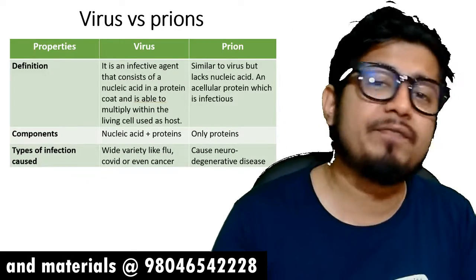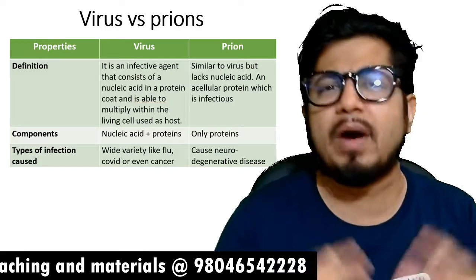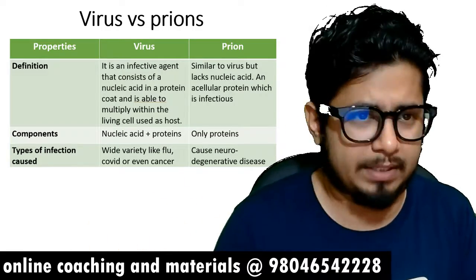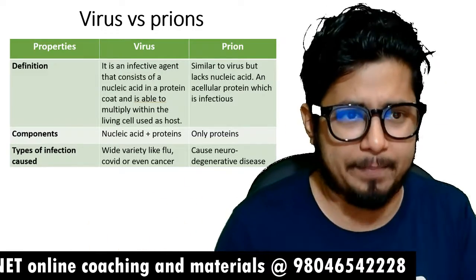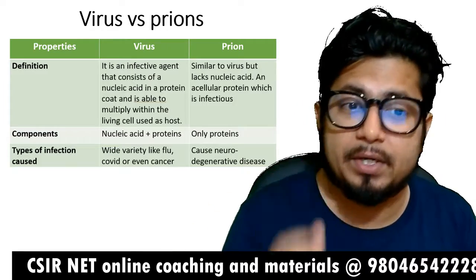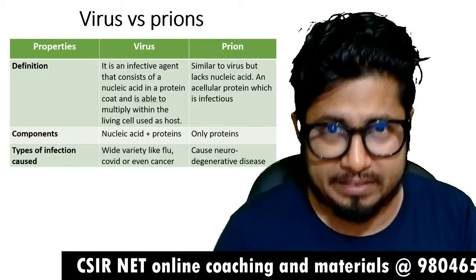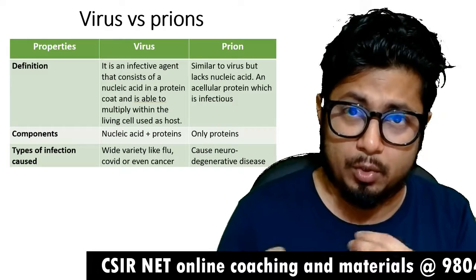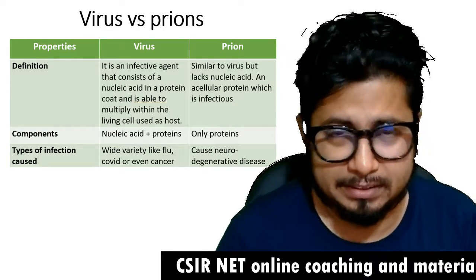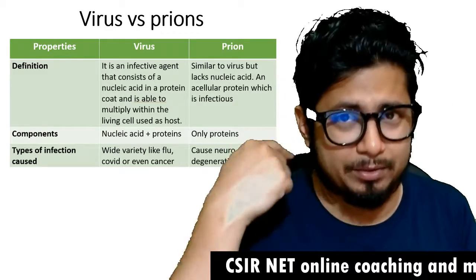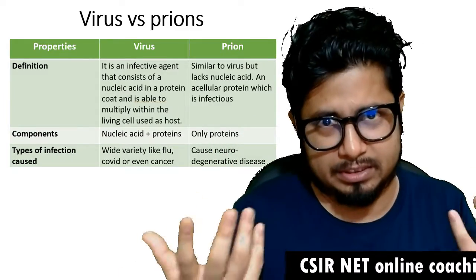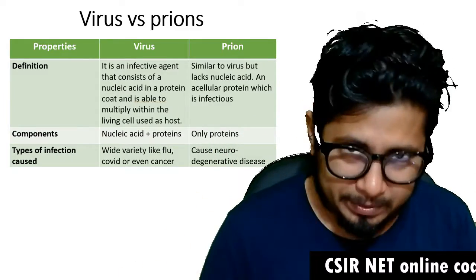In terms of infection type, viruses cause a wide variety of infections like flu, COVID, and even cancer can be influenced by viruses. Prions cause neurodegenerative disorders like kuru — a disease found particularly in cattle but which can also cause disease in humans.